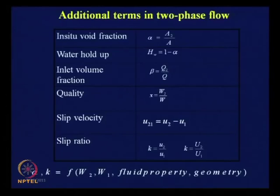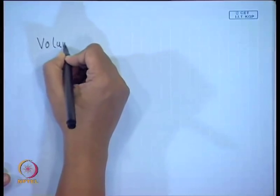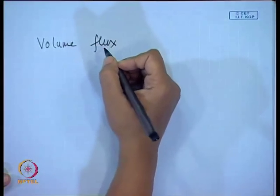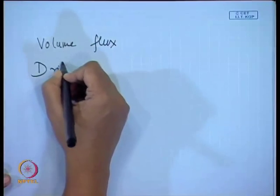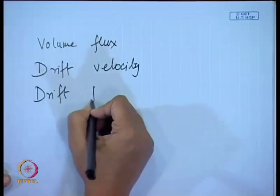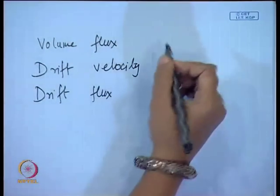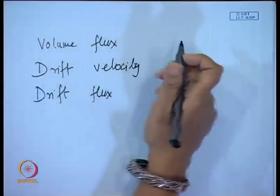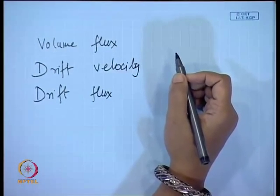I have almost completed this particular portion. The only thing left is three properties I would like to define: volume flux — which I have already defined — drift velocity, and drift flux. Normally we will not be using these things, but for special models we will be using them. These three properties are what we will be defining, and then we are going to finish this nomenclature section and move to the analysis part.